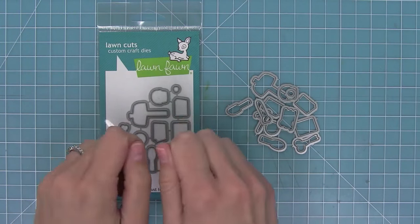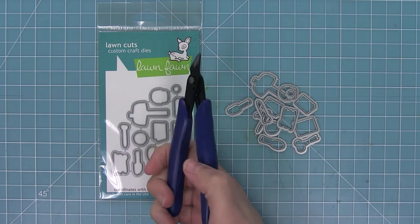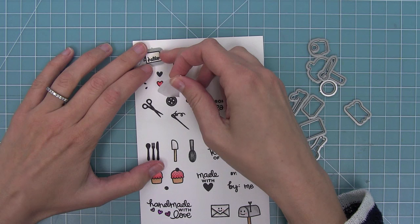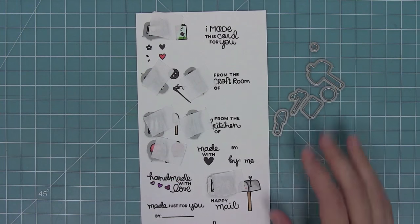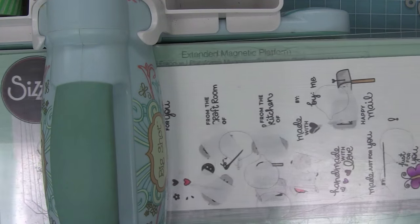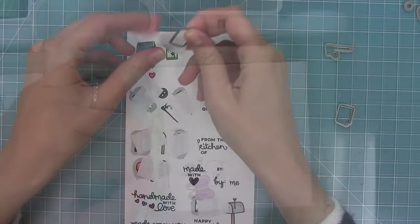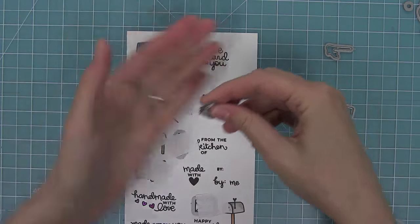Now here are the dies for Just For You. You can bend them apart at the tabs or use your wire snips to cut them apart, and then you can line them up with your stamps and hold them in place with some post-it note tape. Run it right through your die cut machine and you'll see that it's going to cut these adorable tiny little images out for you just perfectly.